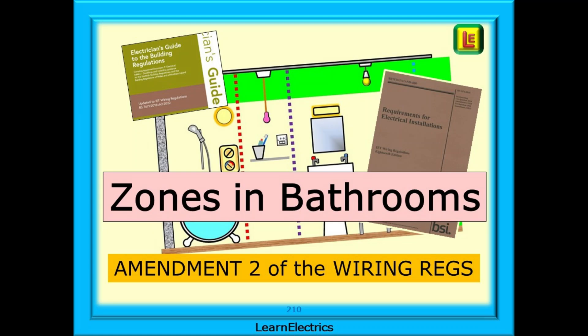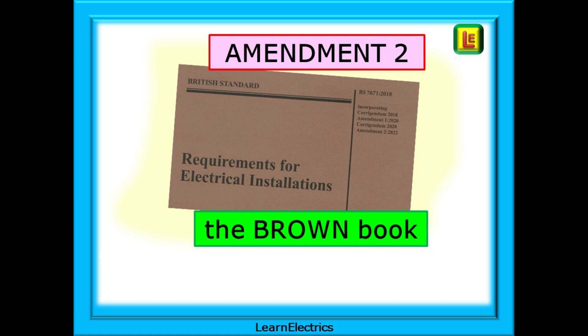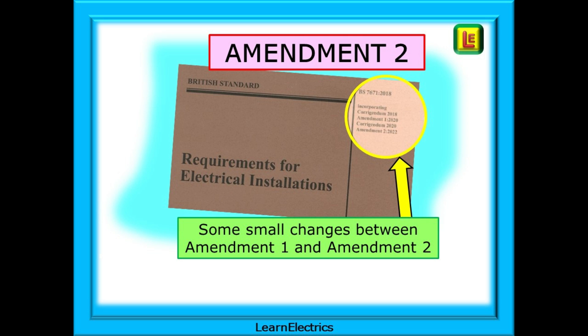This video is about the zones in bathrooms as updated by Amendment 2 of the wiring regulations. Just a few weeks ago one of our community asked if I was going to update the bathroom guidance — and I realized I hadn't done it at all, so here it is now. This video uses the brown Amendment 2 18th edition book, with page numbers referenced in that book. There are some small changes between the amendments and we cover the relevant ones here.